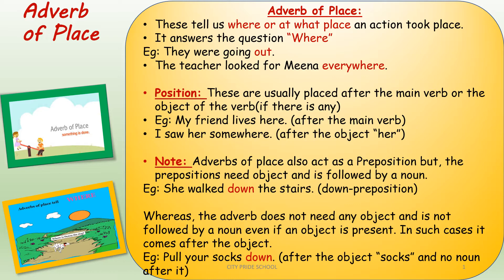Let's go back to the same examples. 'They were going out.' Here, after 'out' we don't have any noun — hence, 'out' is adverb of place. Again, 'the teacher looked for Mina everywhere.' Here 'everywhere' is adverb of place because there is no noun after it.